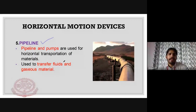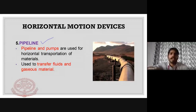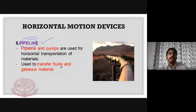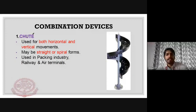Pipelines are a horizontal transportation device used to transfer fluids and gaseous materials. For example, a gas pipeline is used for the horizontal transportation of gas. If transporting concrete horizontally by pipe, that is also a type of pipeline device.